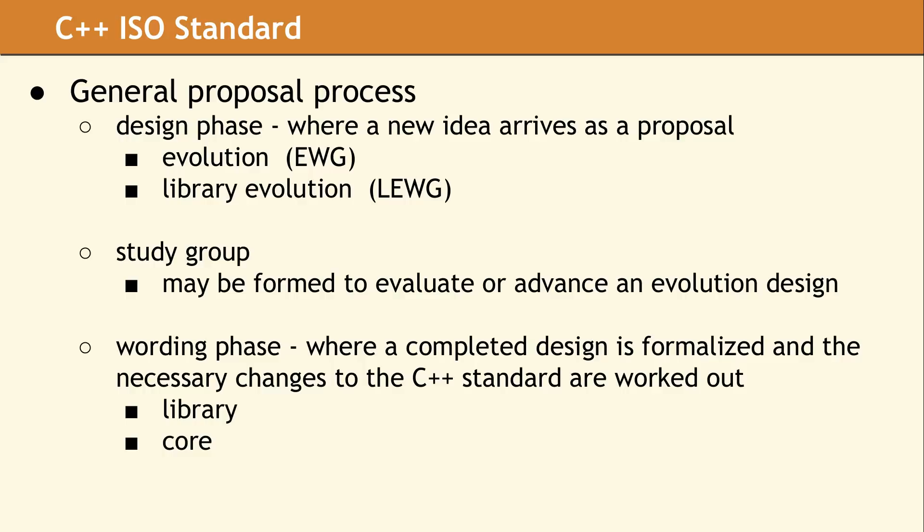To improve this process, WG21 decided to add fewer proposals to each new IS and send a draft to ISO every three years. Sometimes this means a proposal is pushed out a few years, while other features which are ready for the draft will be available sooner. Project management is easier when there is a consistent release schedule for a new C++ standard.